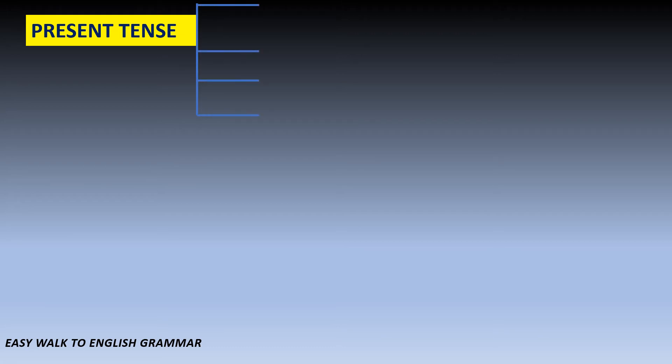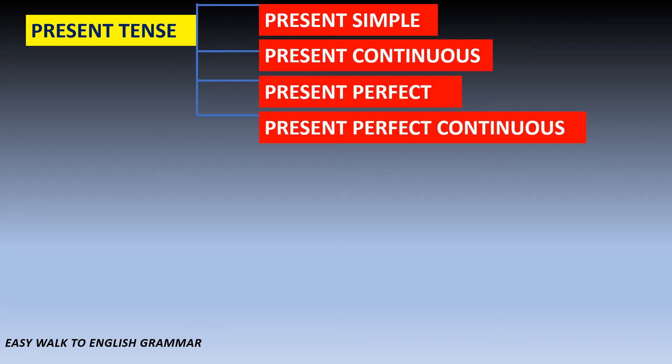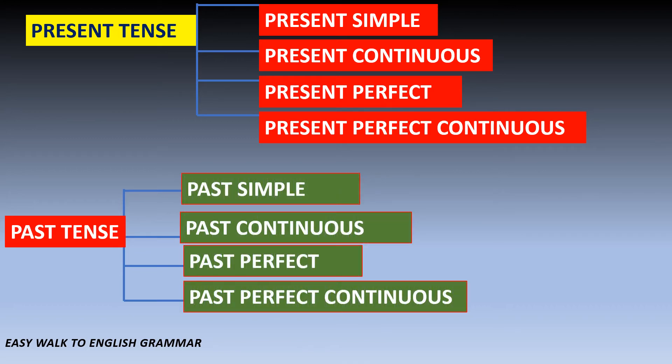Now we are moving on to the most familiar aspect about tenses: the classification of tenses. As this is a video which introduces tenses, we cannot avoid that step. Present tense is divided into four: present simple, present continuous, present perfect, and present perfect continuous. The second is past tense, and the divisions are the same. Past simple, past continuous, past perfect, past perfect continuous.